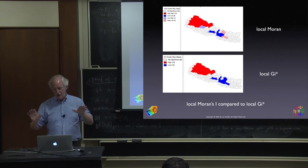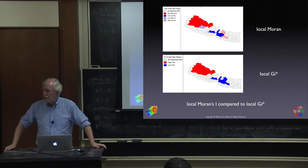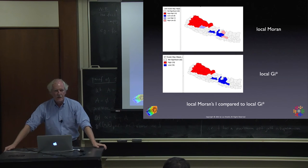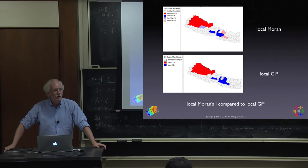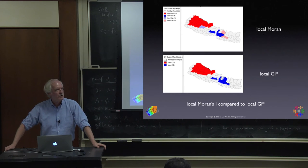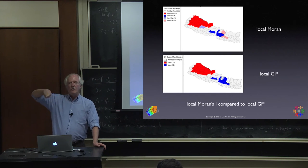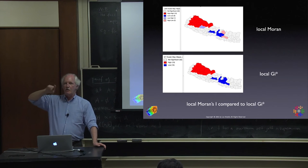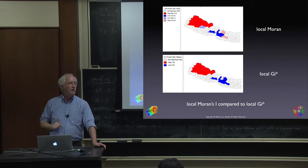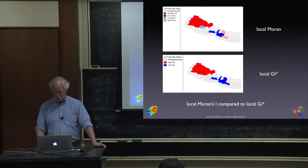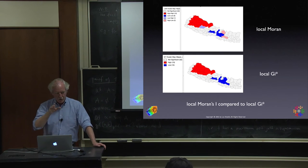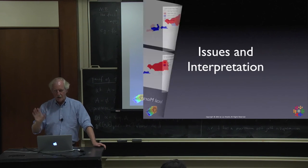One side effect not widely reported in the literature but used in GeoDa: you can use the G_i* statistic as a local joint count statistic. If you're interested in finding how many ones surround a given one locally rather than globally, you can use G_i* to do that with a little trickery.